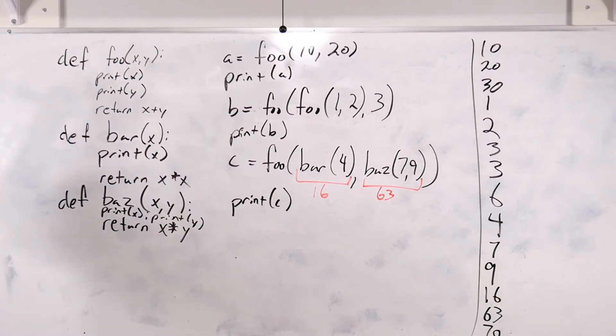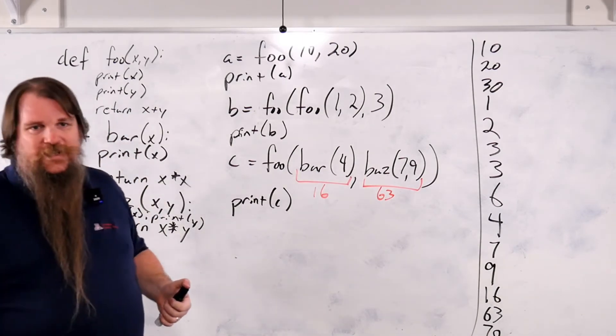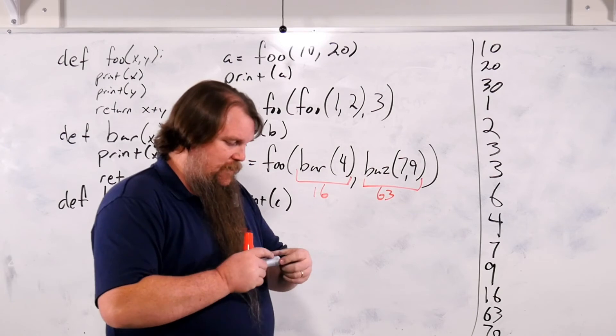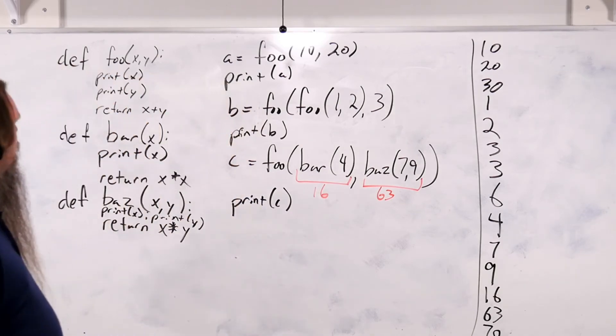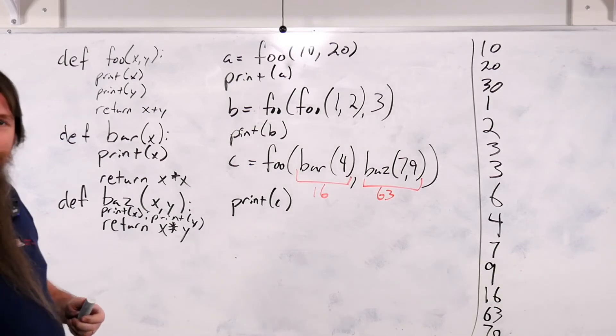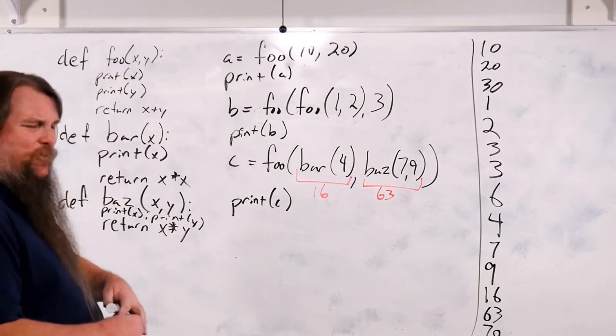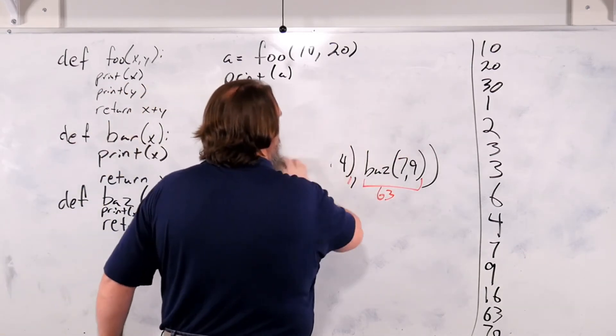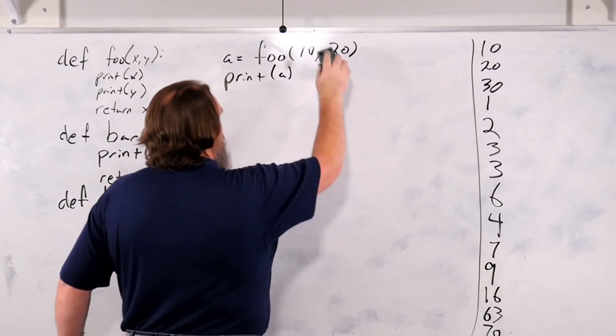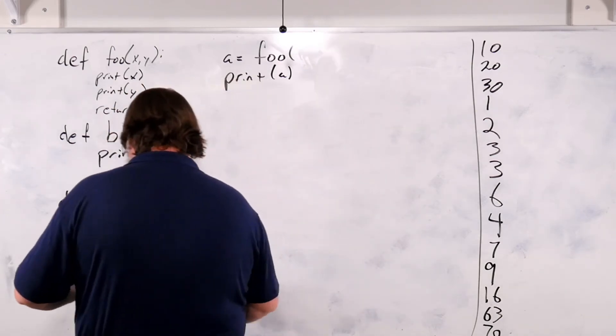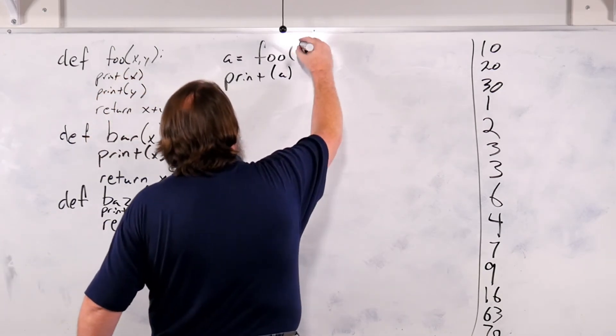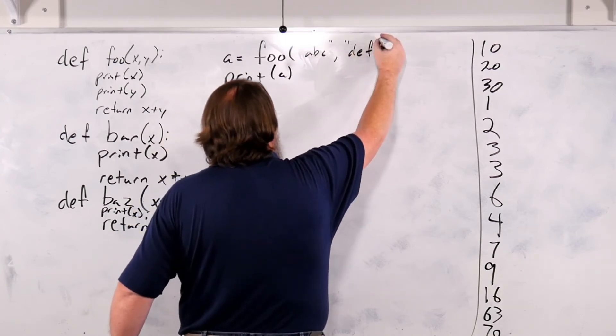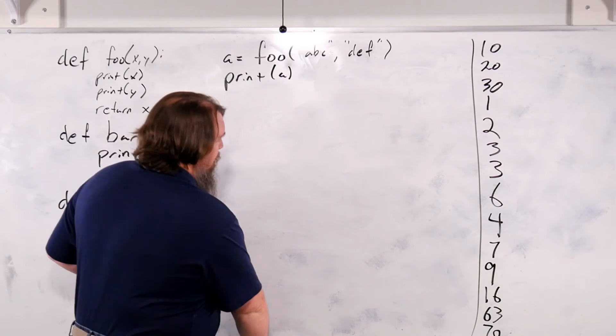Alright, so this is functions. There's nothing particularly different about how they work in Python as opposed to how they work in other languages. That's a pretty good quick summary of them. Let's do one more thing before I go. I'm going to erase all of this and do one more example. I told you that Python doesn't control what the types of things are. What if you say foo of a, b, c, d, e, f?